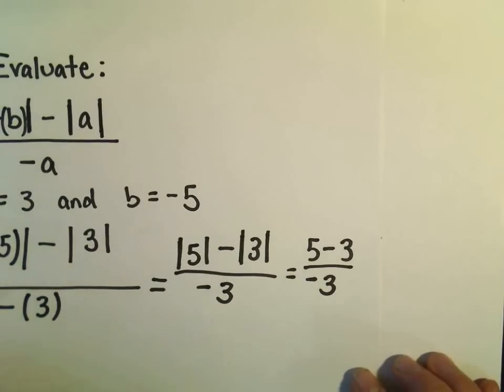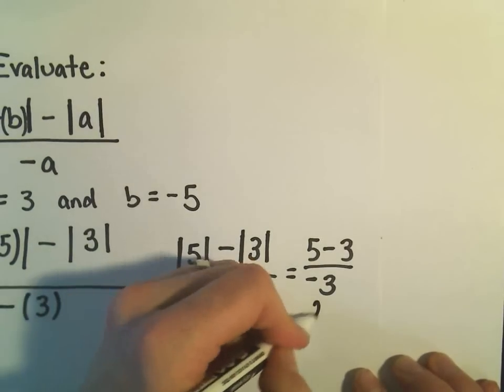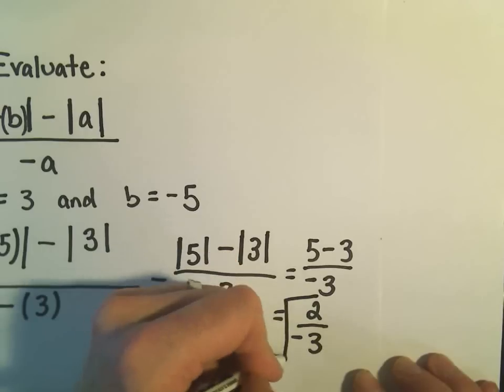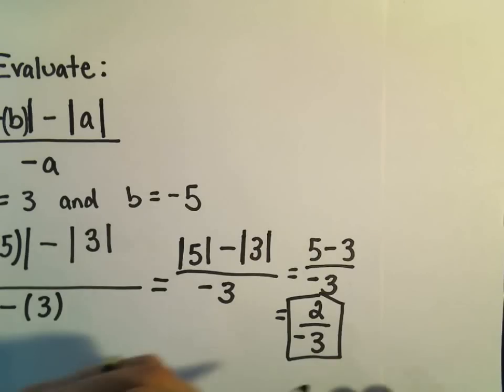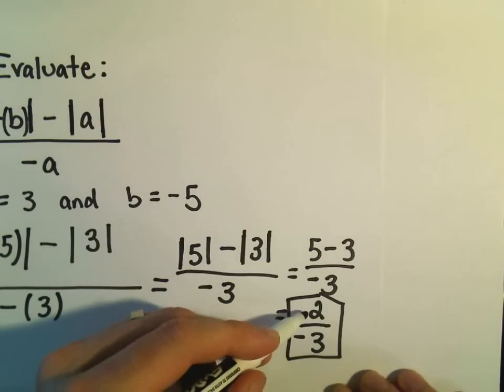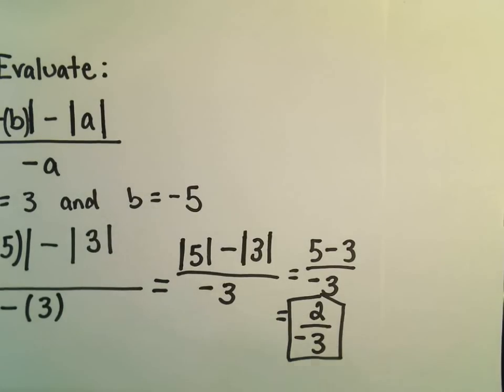And 5 minus 3, that simply gives us positive 2 over negative 3, and that will be our solution: negative 2 thirds. And again, you can put the negative on the top or out front, however you want to write it.